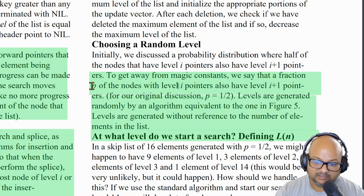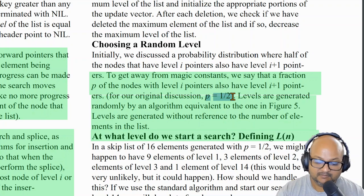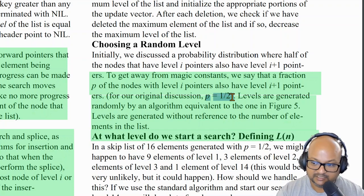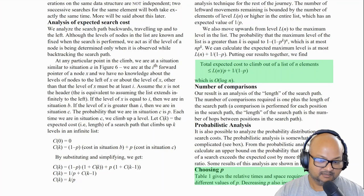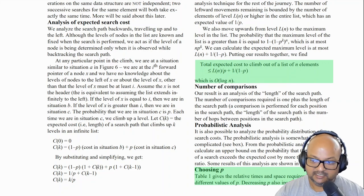The way the author models it is that we want a fraction p of the nodes with level i to also have level i plus one pointers. And if p is half then we get the familiar distribution where half of the nodes are level one nodes, a quarter of the nodes are level two nodes, and so on. The author has a brief proof, but with this kind of setup the expected complexity of searching is log n.